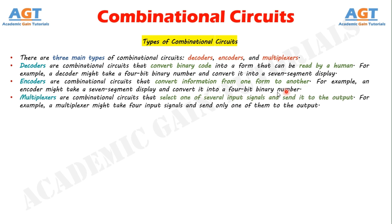Multiplexers are combinational circuits that select one of several input signals and send it to the output. For example, a multiplexer might take 4 input signals and send only one of them to the output.